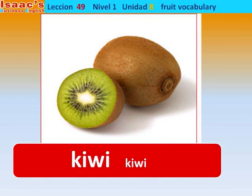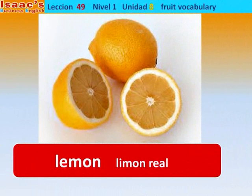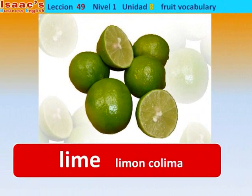Kiwi — Kiwi. Lemon — Limón real. Lo que en inglés se dice lemon, en español decimos limón real. Lime — En México el limón colima es el más común, es agrio. Hay lima que no es agria, pero esta no es. Este es un limón agrio, y los norteamericanos le dicen lime.